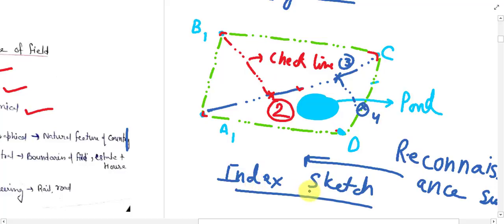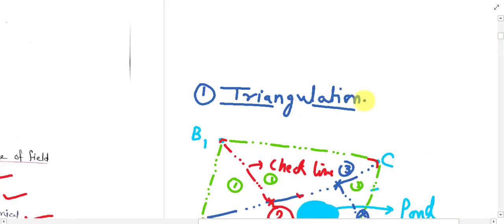This type of map is known as index sketch and this index sketch is considered or drawn after the reconnaissance survey. In this figure we have drawn some triangles like triangle one, triangle two, triangle three. So when we convert our land area into number of triangles this process is known as triangulation. We already covered this portion.